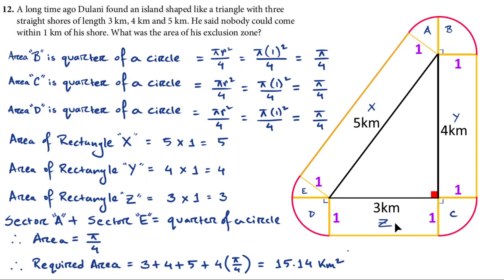And by the way I have named all these regions as area A, B, Y, C, Z, D, E and X. So these are the regions we need to add so that we get to find the total area of the exclusion zone.